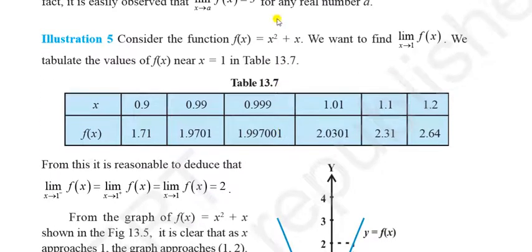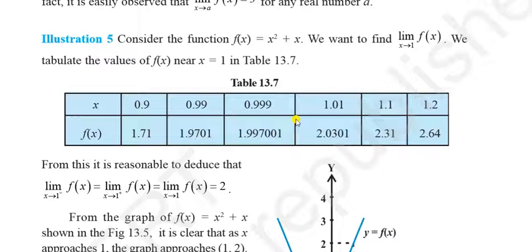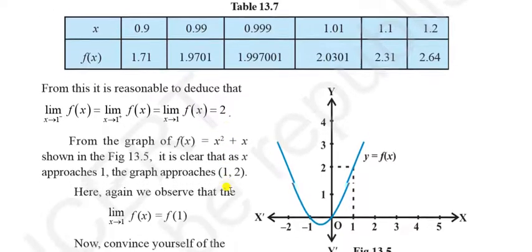Next: f(x) = x² + x. Find the limit at x = 1. From the left: x = 0.99 gives x² + x ≈ 1.9701; values approach 2. From the right: x = 1.1 gives 2.31 — decreasing toward 2. Left-hand limit = 2, right-hand limit = 2. Both equal 2, so the function has limit 2 at x = 1. This is a parabola, and from both sides the function value approaches 2.